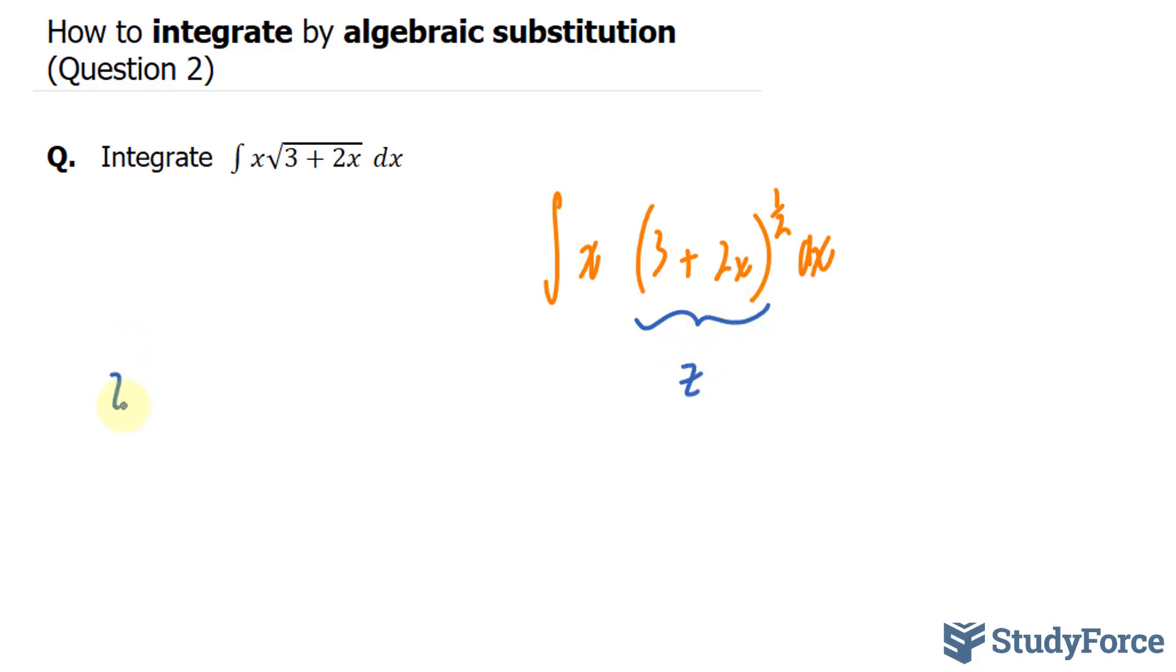So we have z equals (3 plus 2x) all powered to half. Next, what you want to do is solve for x in this equation. We do that by squaring both sides. That gives us z to the power of 2, and on the right side, we have 3 plus 2x.